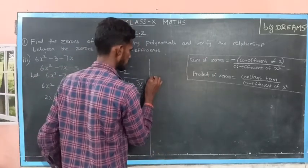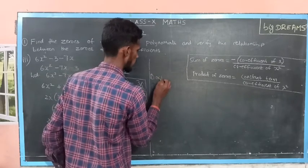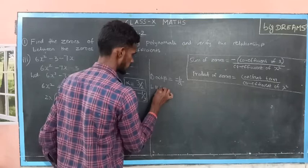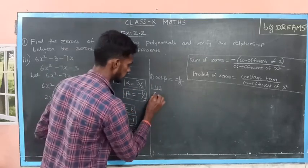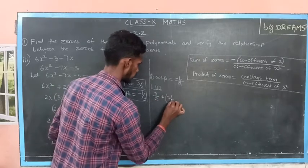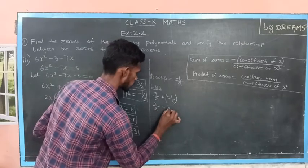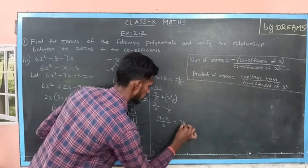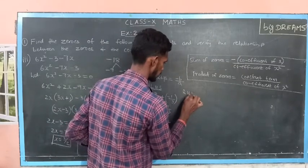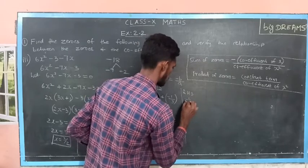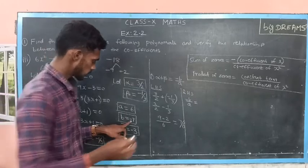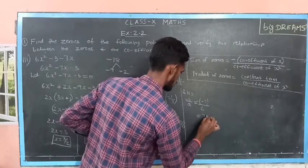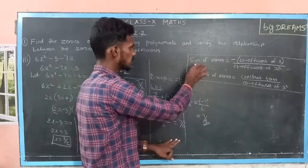Consider the first condition: sum of zeros, that is alpha plus beta, is equal to minus b by a. You have to verify this condition. Consider the LHS: alpha plus beta, that is 3 by 2 plus minus 1 by 3, which is 3 by 2 minus 1 by 3. Taking 6 as LCM, I will get 9 minus 2, which is equal to 7 by 6. Consider the RHS: minus b by a, which is minus of minus 7 by 6, that is 7 by 6. Thus, LHS is equal to RHS; the first condition is verified.